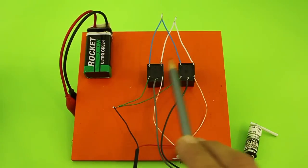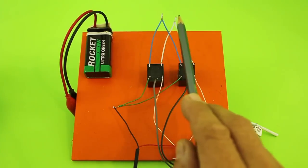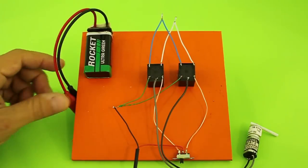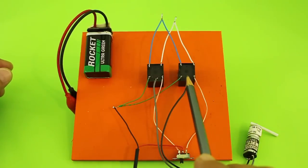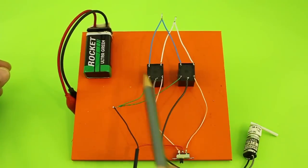These are the normally open contacts which are connected together. And the normally closed contacts are also connected together. Here we will connect the power battery for the motor. The motor is connected to the common contacts of the relays, these two contacts.